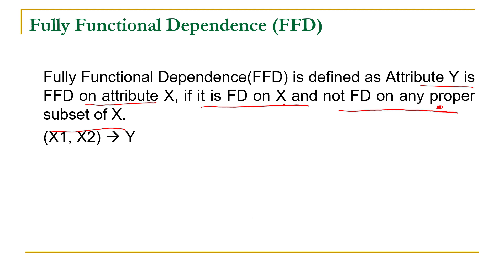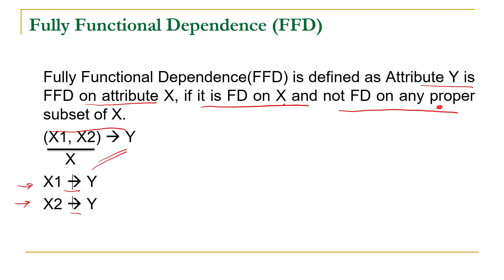We are talking about a scenario where Y is fully functional dependent on X, where X is a combination of X1 and X2. Y should be functional dependent on X but not on any proper subset. Here we have two subsets of X: X1 and X2. Y should not be functional dependent on any proper subset, but should be functional dependent on the combination X1 and X2.